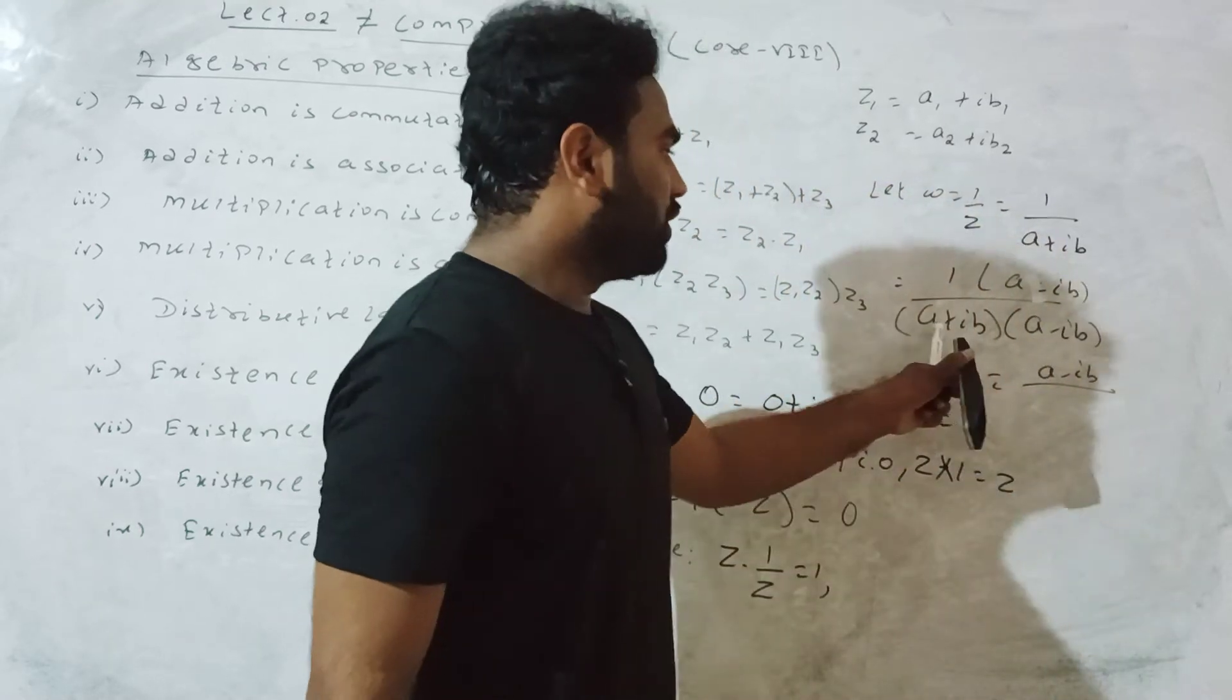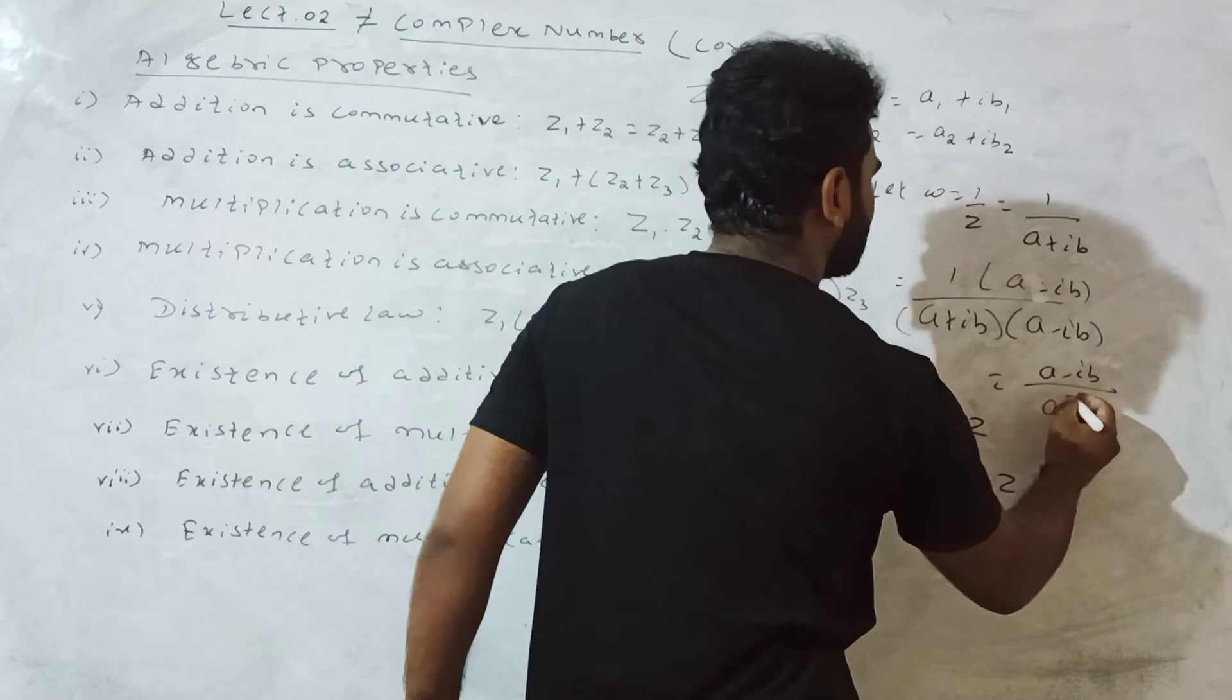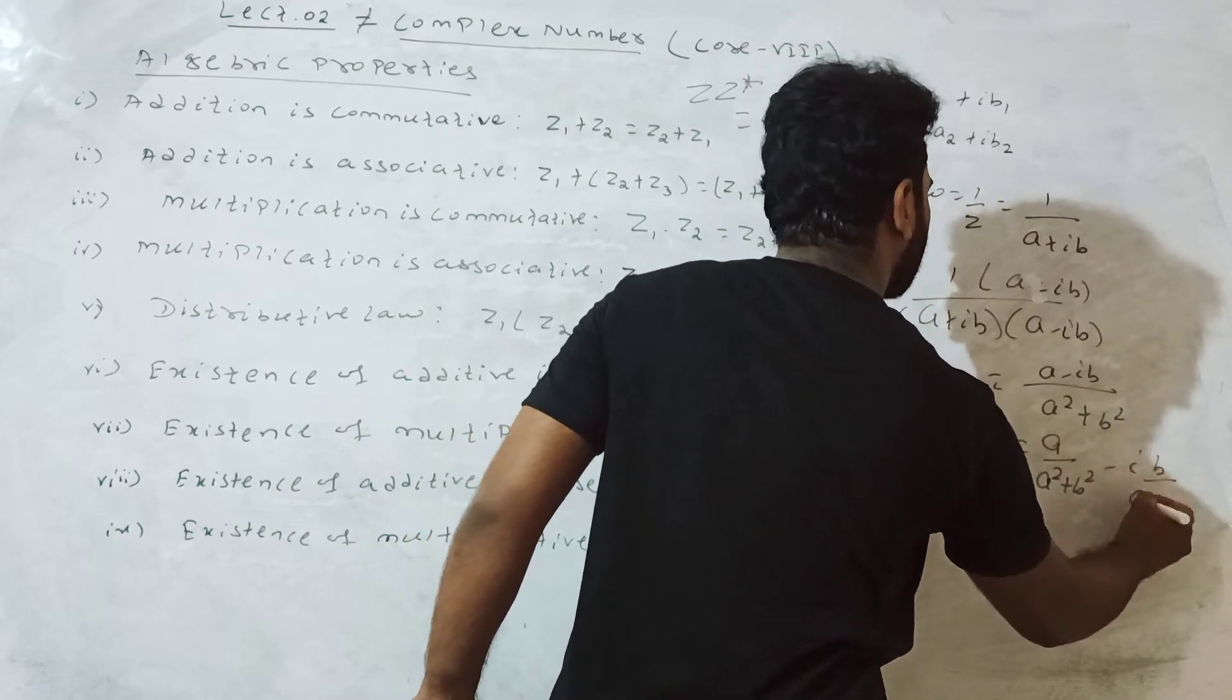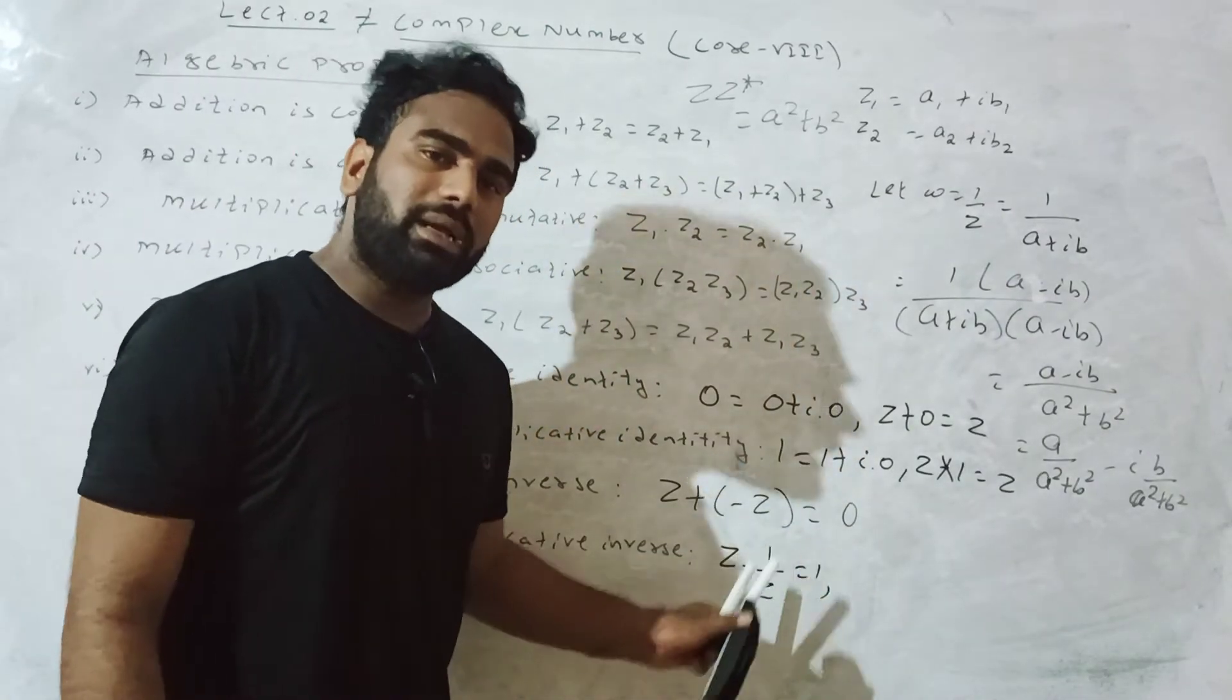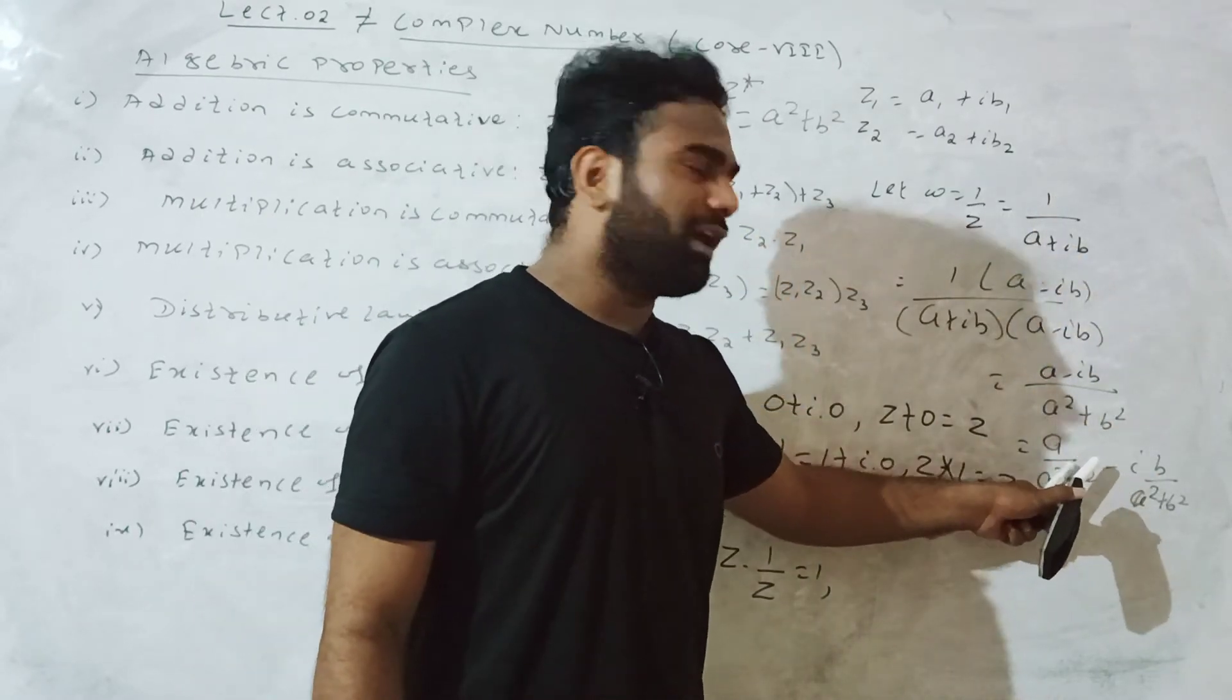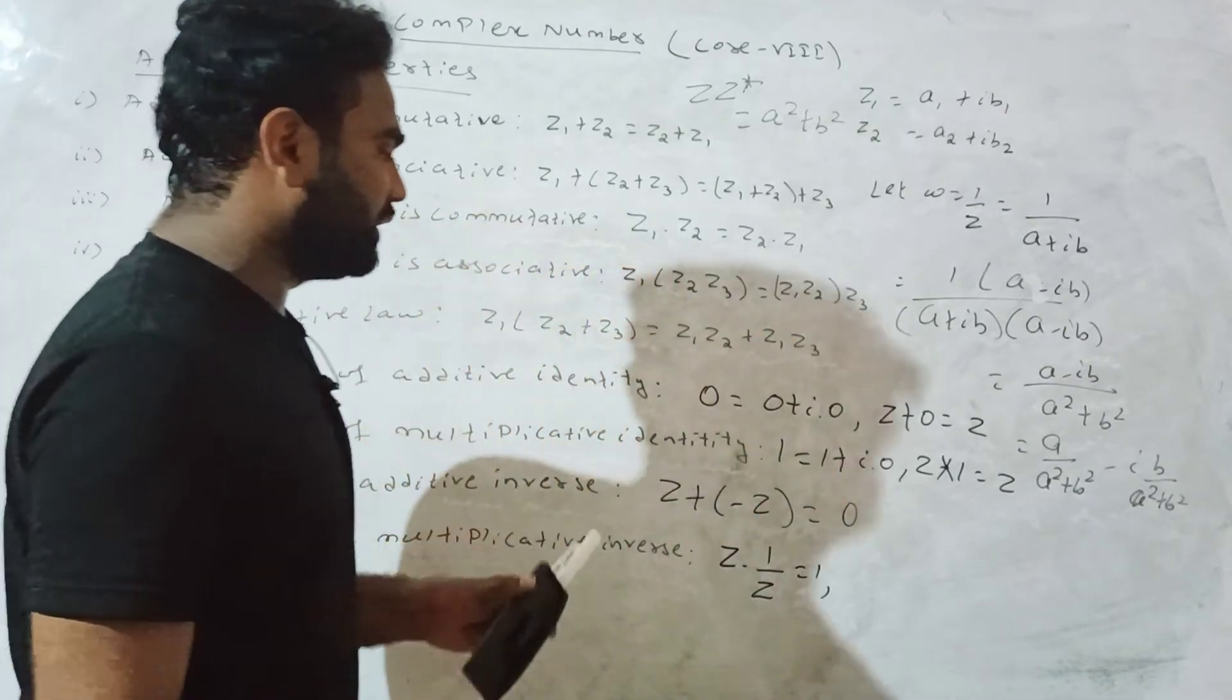Multiplicative inverse. From lecture one, z into z star conjugate gives a squared plus b squared. The multiplicative inverse is a divided by a squared plus b squared minus i times b divided by a squared plus b squared. This is existence of multiplicative inverse.